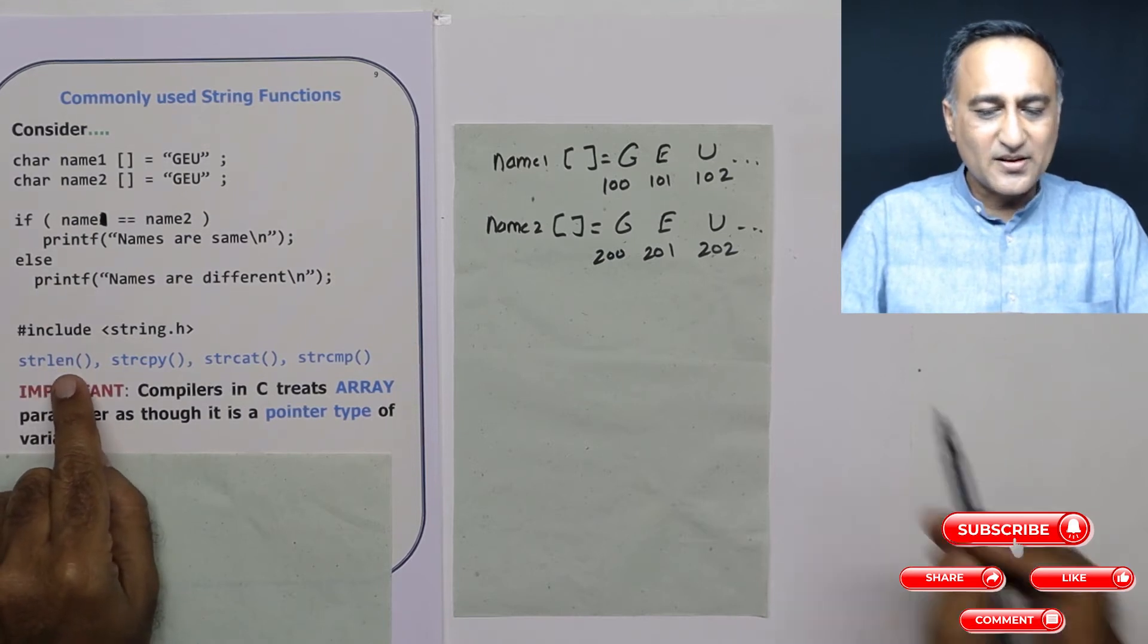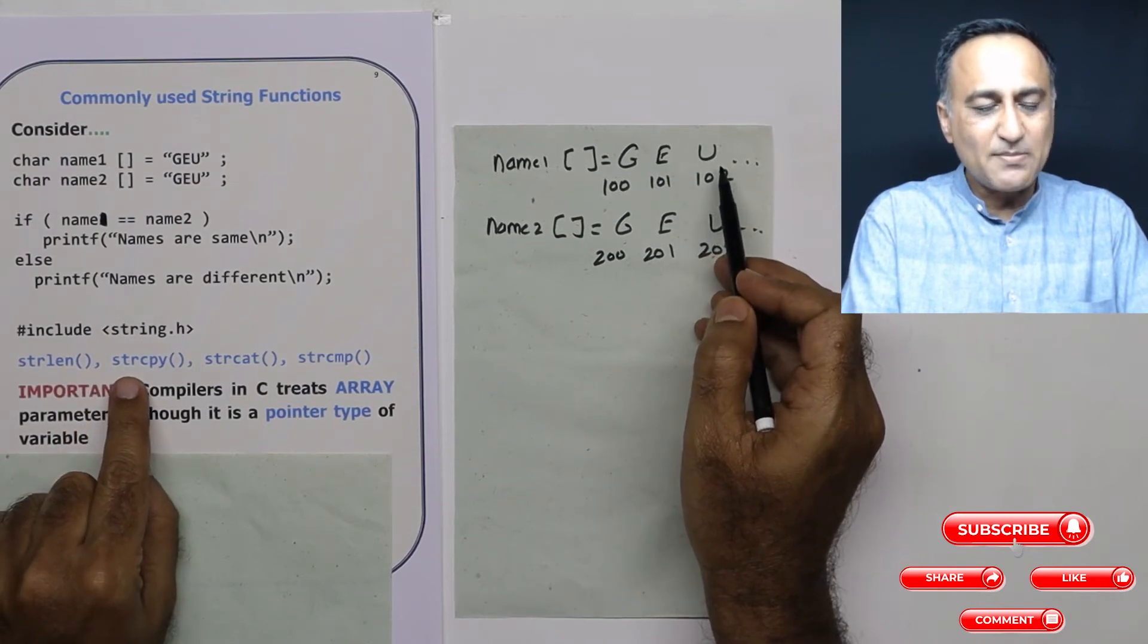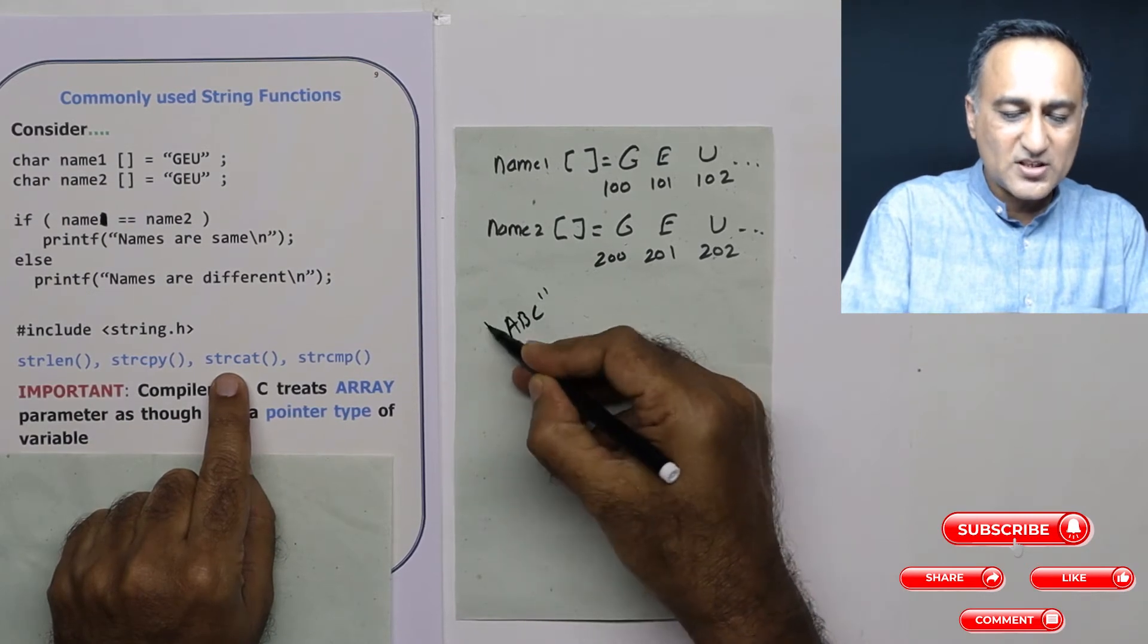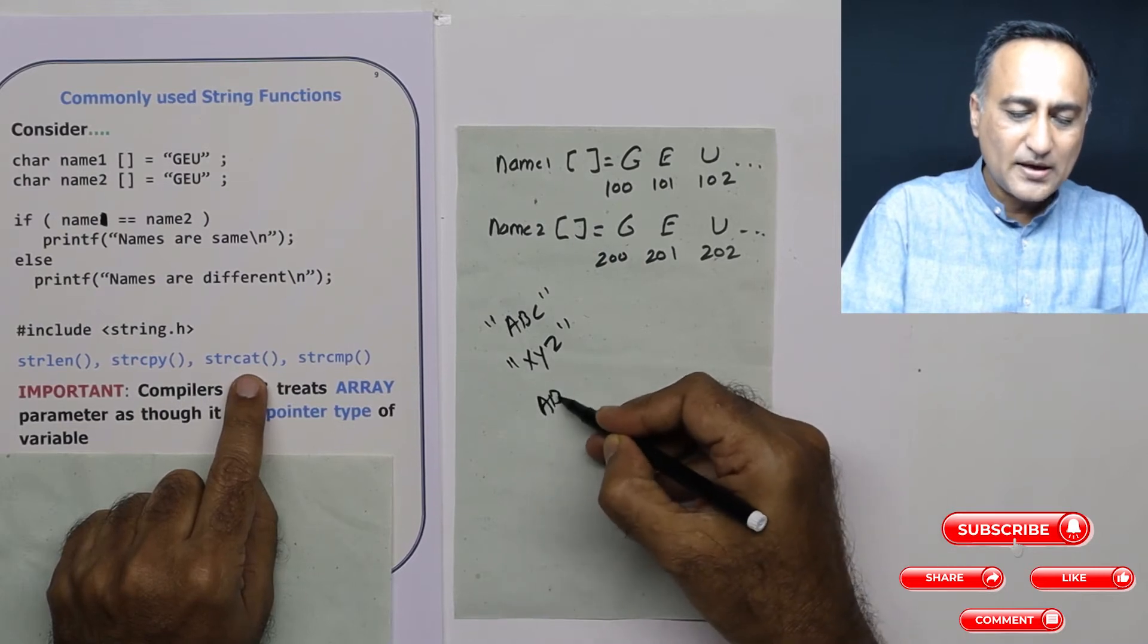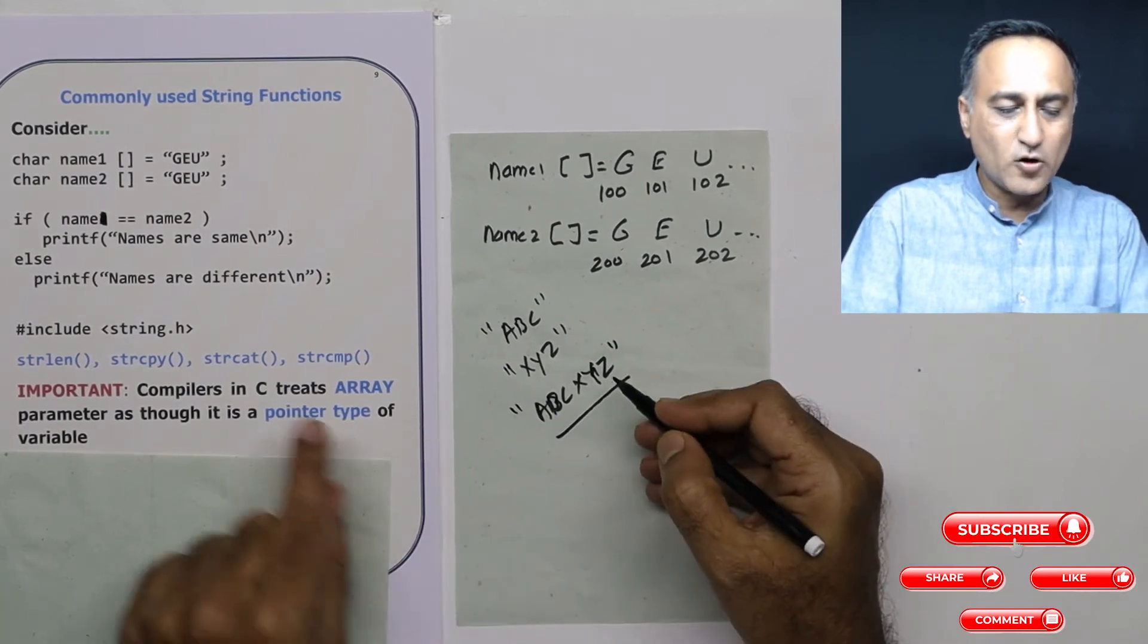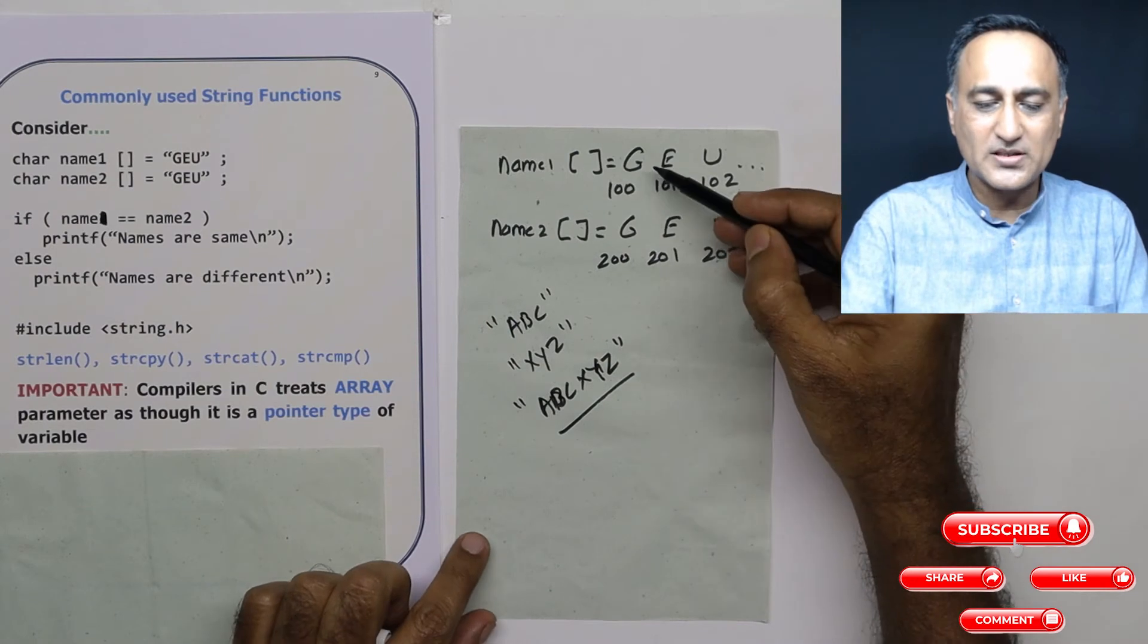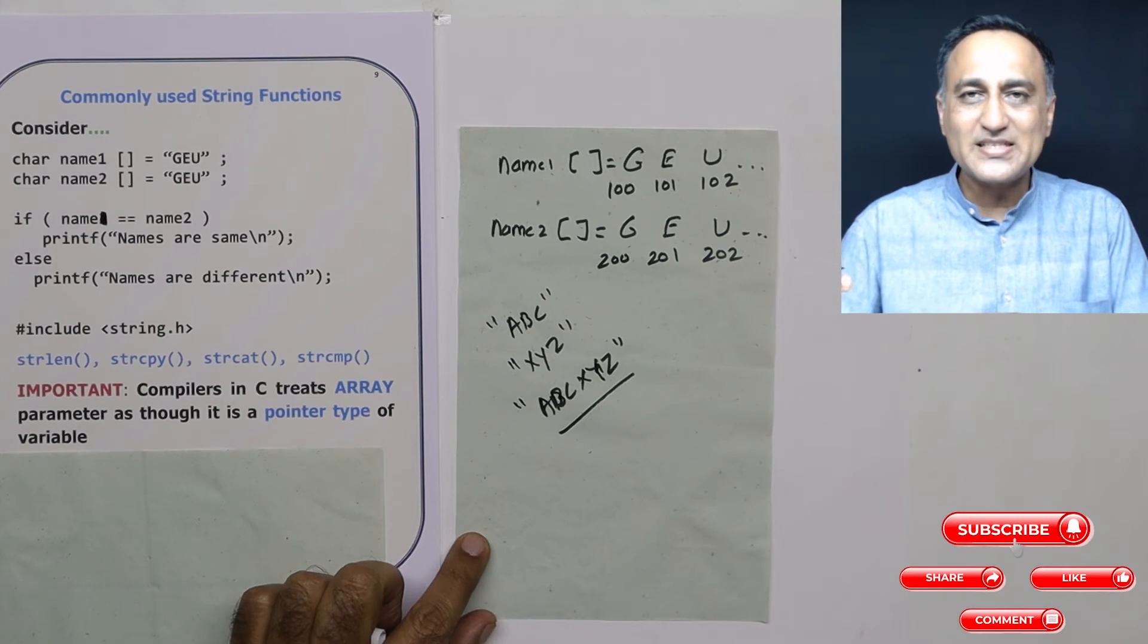strlen stands for string length. So how many characters are there? String length will give you three. strcpy as the name indicates is going to copy the content of one array of characters to the other. strcat is string concatenate. Suppose I have ABC as one string and XYZ as the other one. If I concatenate, it will be ABCXYZ. strcmp indicates comparing two strings. Using strcmp, I can compare name1 and name2, and then it will say both are equal.